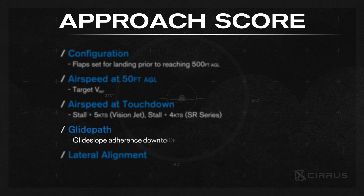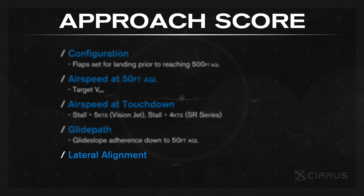Glide path — based off the visual glide slope indicator data for that runway, scored for the final approach all the way down to 50 feet AGL. Finally, lateral alignment — past 300 feet AGL and all the way down to 50 feet AGL, are you on centerline?